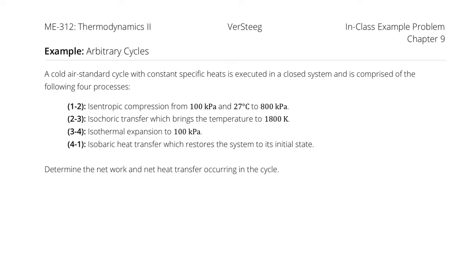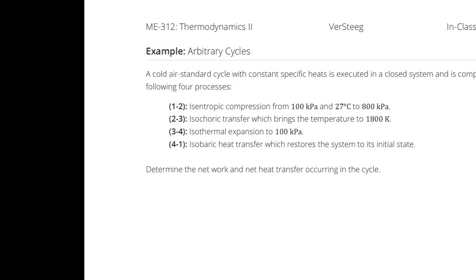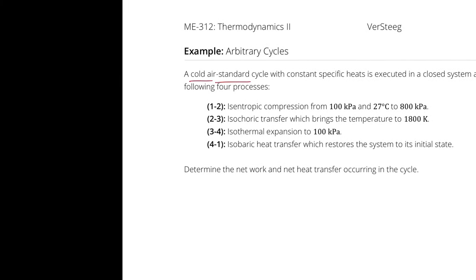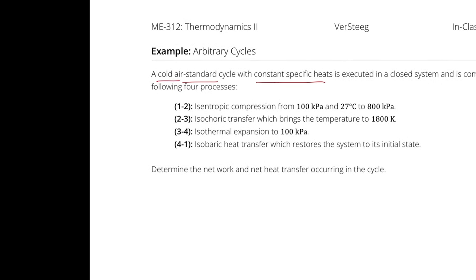The 'cold air standard' means we are analyzing ideal air using the air standard assumptions. The 'cold' in cold air standard implies we are using constant specific heats — which is also explicitly stated — and furthermore that those constant specific heats are evaluated at 300 K. Regardless of the actual temperature of the air at any state point, we evaluate properties at 300 K.